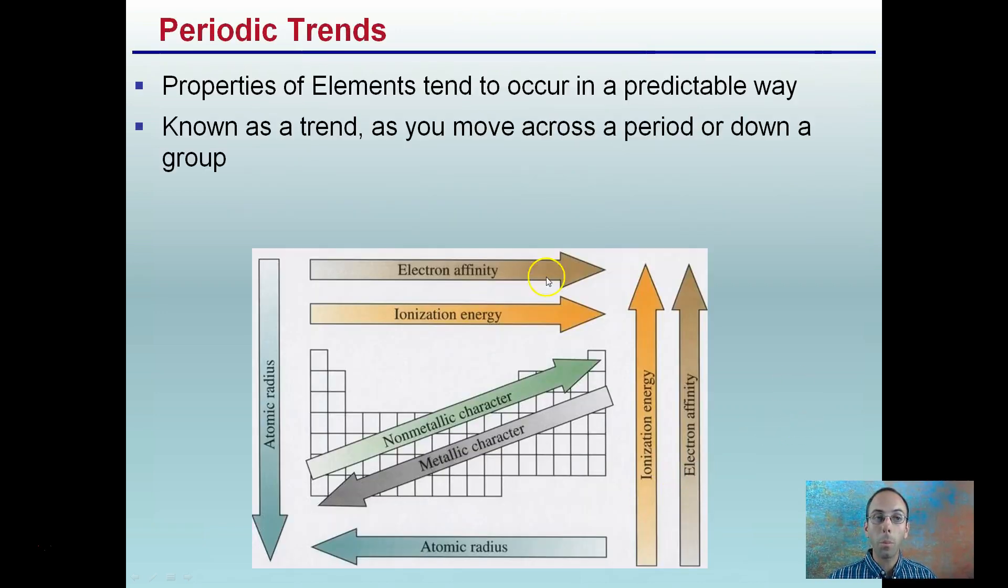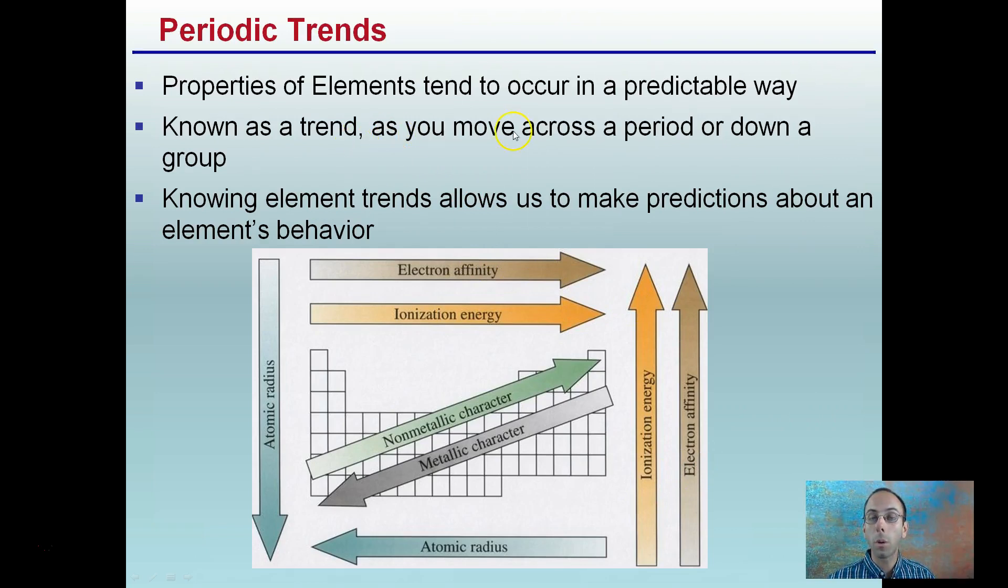So our periodic trends, properties of elements tend to occur in a periodic way, known as a trend. As you move across a period or down a group is what we're going to be looking at. Knowing element trends allows us to make predictions about an element's behavior.